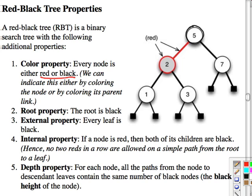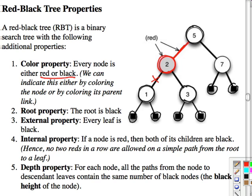The external property is that every leaf is black. With these trees, leaves are always empty but we always consider them as being there. The internal property is that if a node is red, then both of its children are black. This means you cannot have two reds in a row. The depth property is that all paths from a node to its descendant leaves have the same number of black nodes — that's known as the black height of the tree.